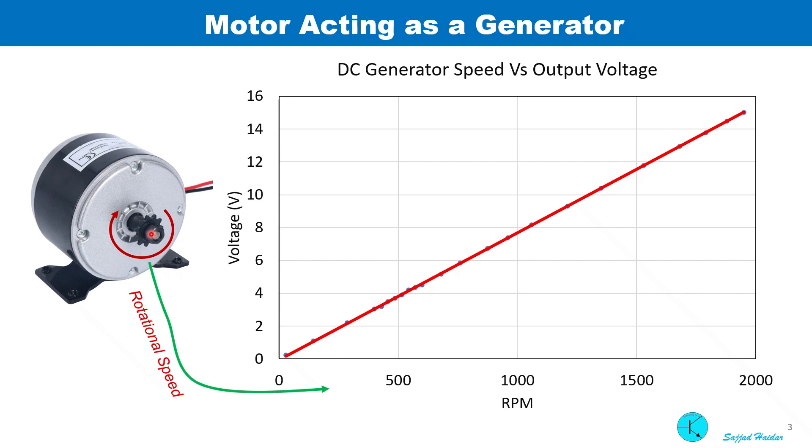Rotating the armature with another motor and controlling the speed, I measured the output voltage at various speeds. The result is shown here in this plot. So to get 15 volts out of it, we have to spin the shaft at nearly 2000 RPM.